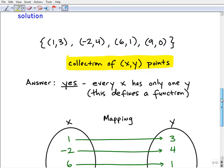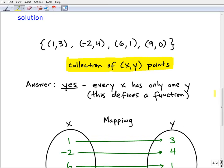So let's take a look at another way we can represent our points. We have our ordered pairs, our points: (1,3), (-2,4), (6,1), (9,0). Now remember each one of these are XY points, XY ordered pairs.